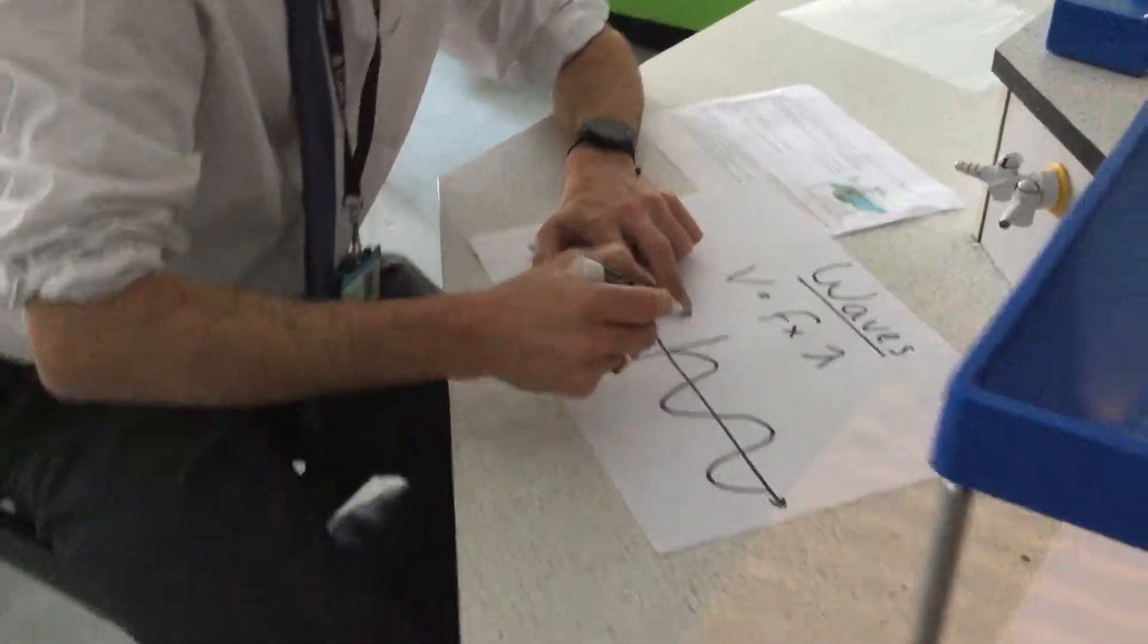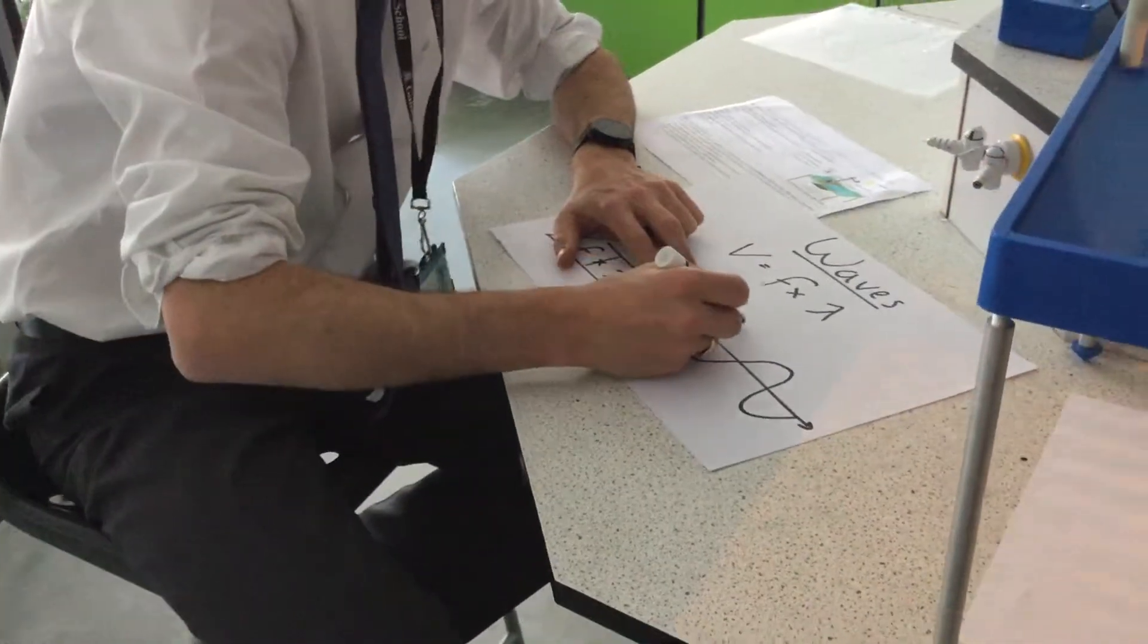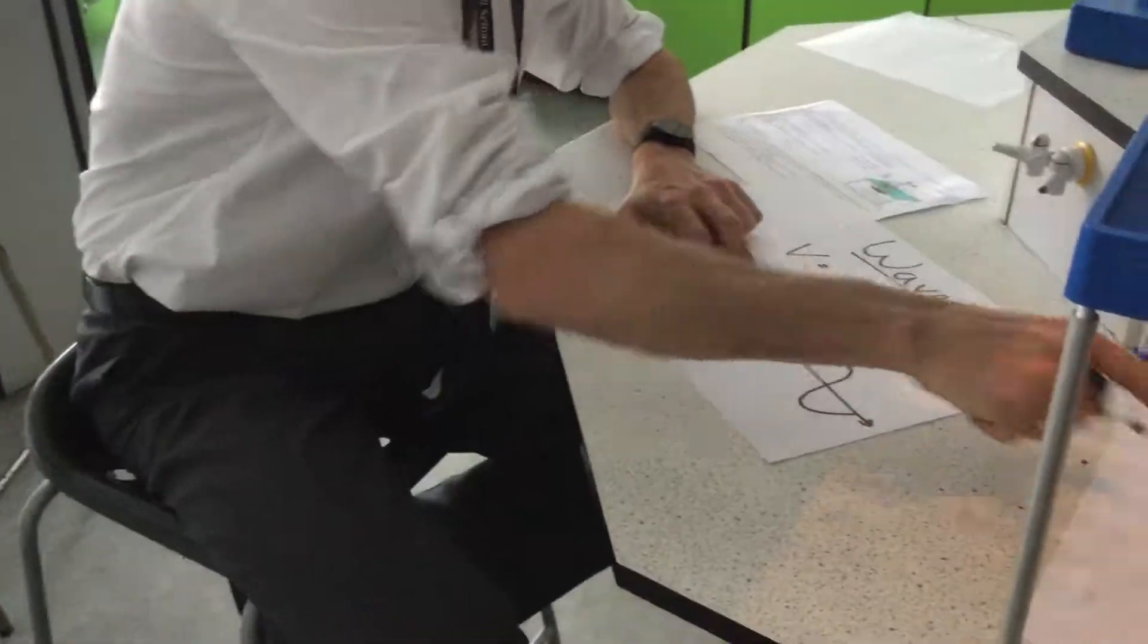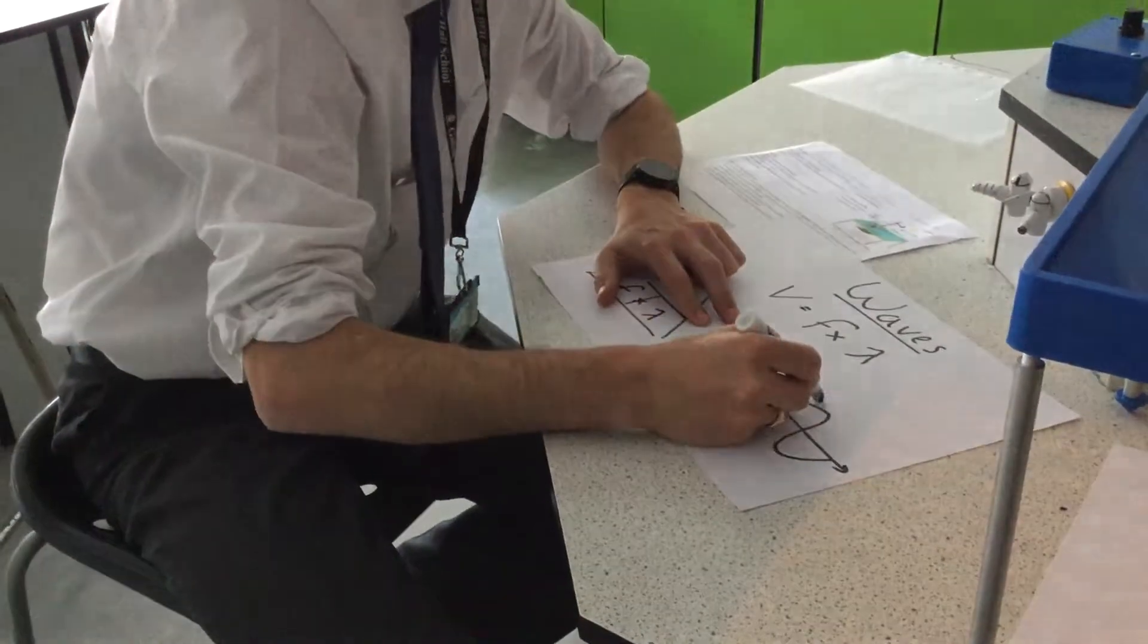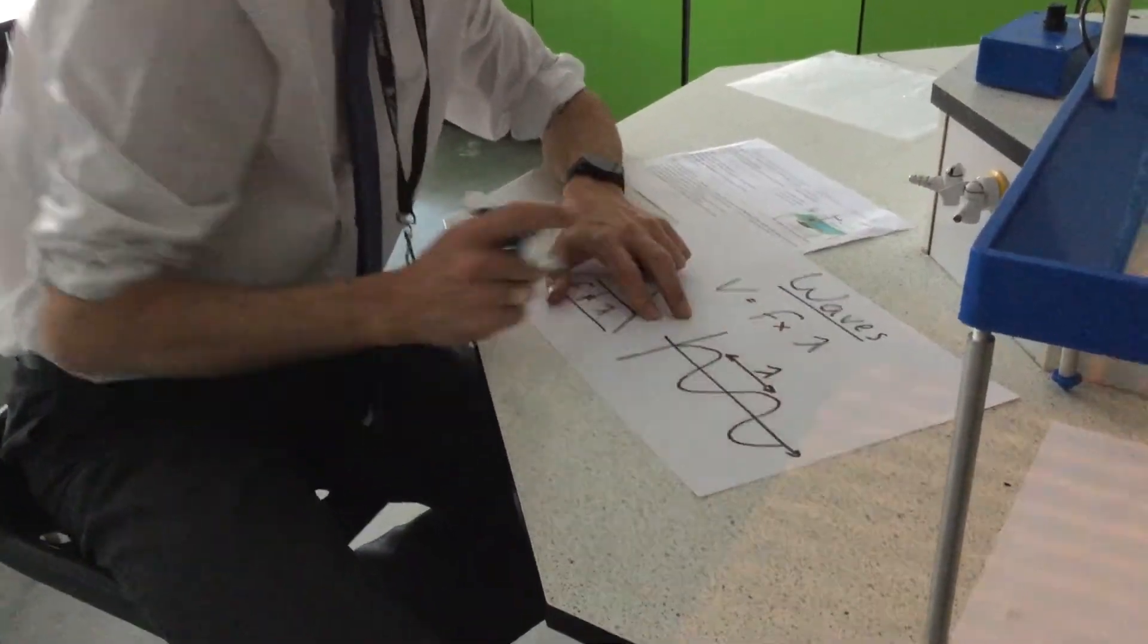And what I can see there with my little light spots on the paper is the gap between two peaks which we call a wavelength.